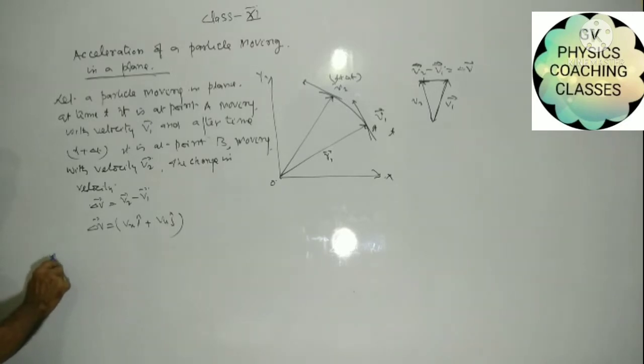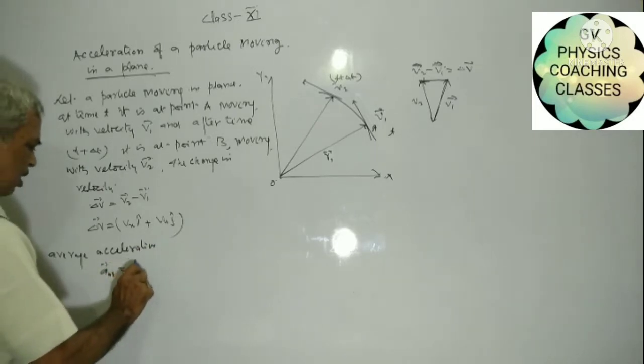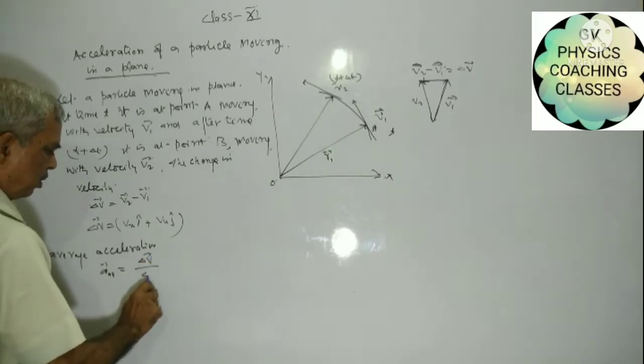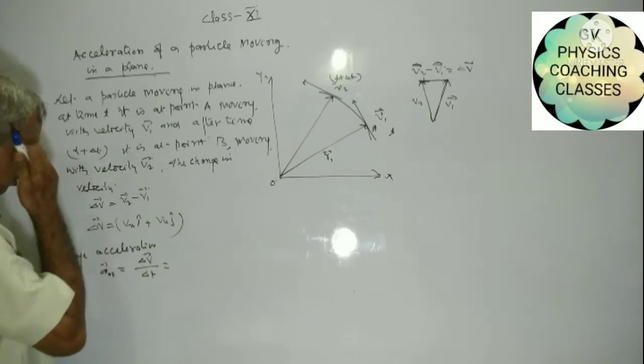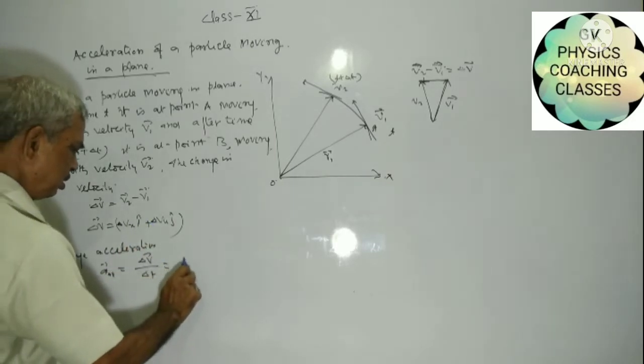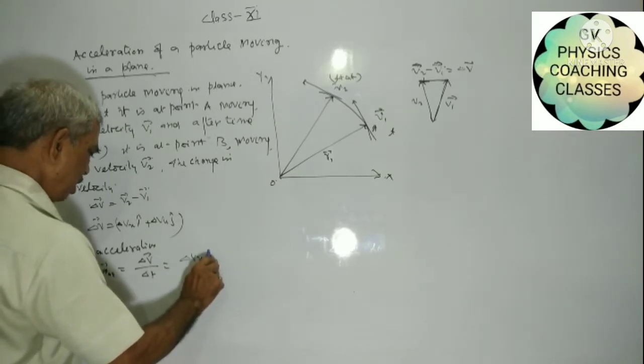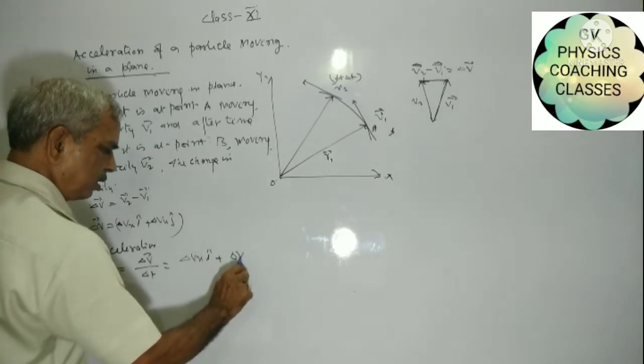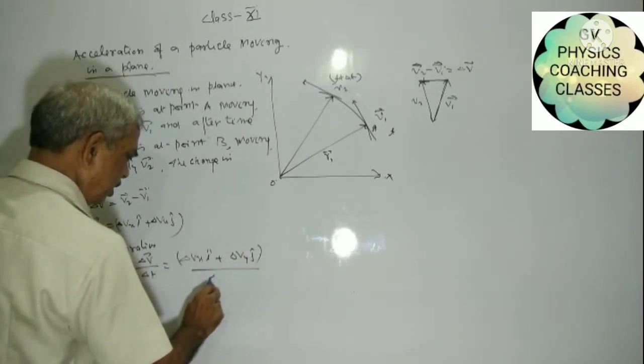Average acceleration: A average equal to delta V upon delta T. And delta V is equal to delta Vx i cap plus delta Vy j cap.